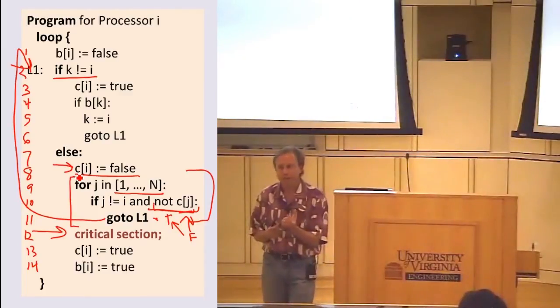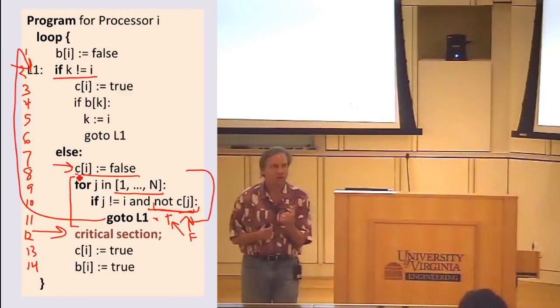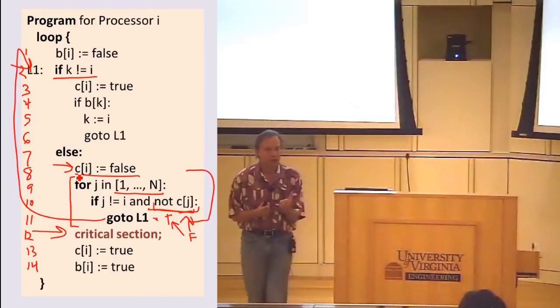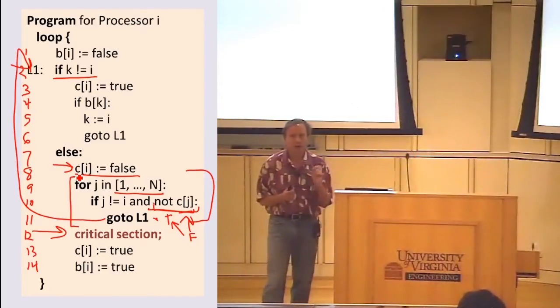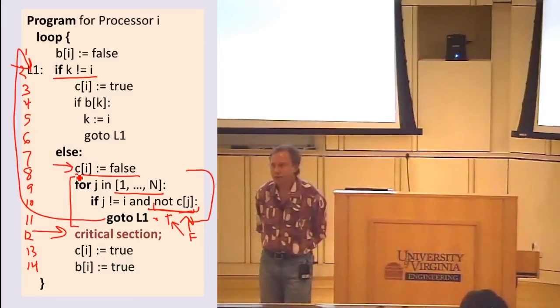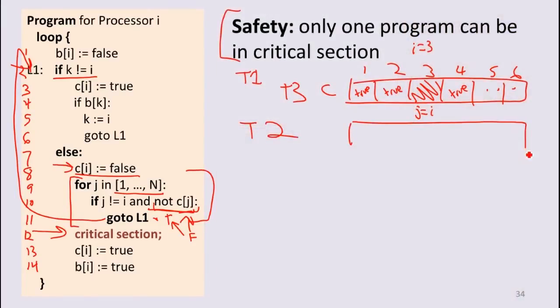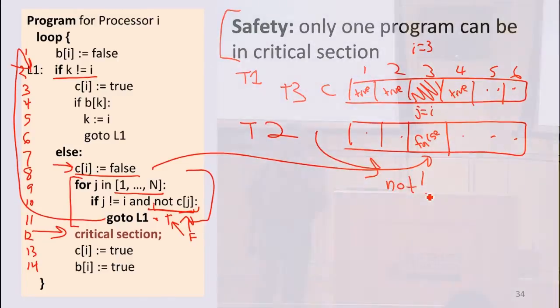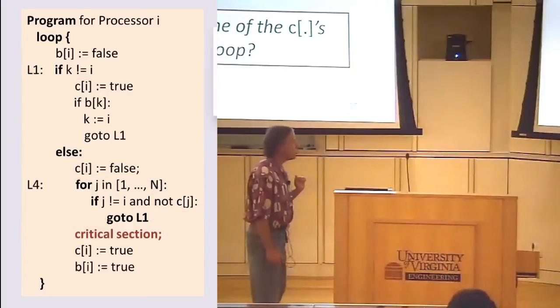Is this enough to provide mutual exclusion? So if this were atomic, the rule is you only enter the critical section if all of the other C values are true. Would that provide mutual exclusion? Some other thread is going through this. j is not going to be i for this, and this was false. Because I set my C value to false, it cannot enter the critical section. So it wouldn't be able to get through that loop. So this seems to provide mutual exclusion.